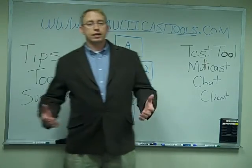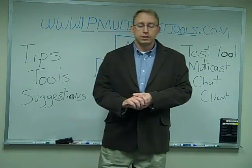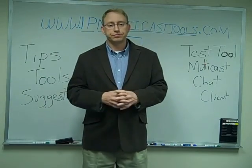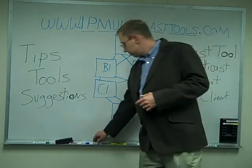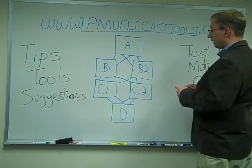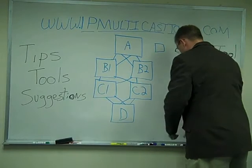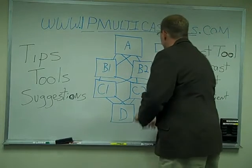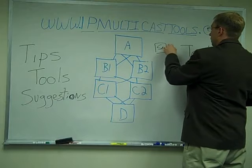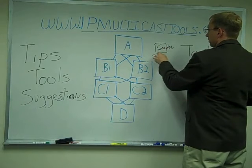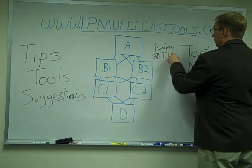So this client can be loaded onto workstations throughout a network. As in this example here, I have a drawing of a basic network. We've got a client up here on this device — let's use a different color to make this easier to see. There's a client here; it'll be a sender, and it's going to send on a multicast group, let's say 1.1.1.